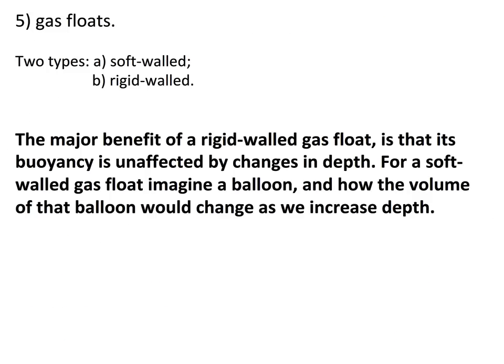Finally, there are gas floats — two types: soft-walled (like balloons) and rigid-walled (like polystyrene floats). The advantage of rigid-walled floats is that buoyancy is unaffected by depth changes. A soft-walled balloon taken from the surface to 10 metres doubles the pressure and halves in size, changing buoyancy. For a hard float there's no such effect, but the risk is that increasing depth may crush the rigid float, whereas a soft float simply gets smaller.